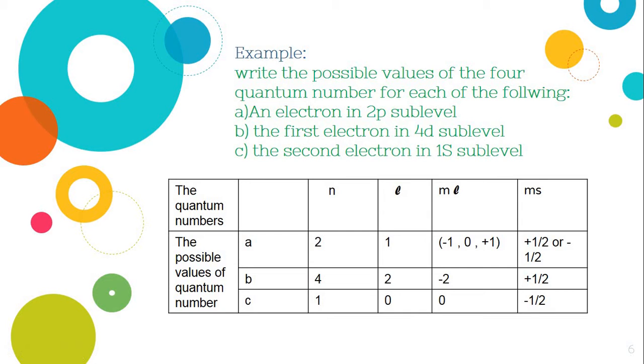And its ℓ will be, where it is? Is it in the s or the p sublevel? The p sublevel. So its ℓ will be 1. Its mℓ will be from negative ℓ to positive ℓ, which will be negative 1, 0 to positive 1. And its ms will be positive half or negative half, since it did not determine if it is the first electron or the second electron.